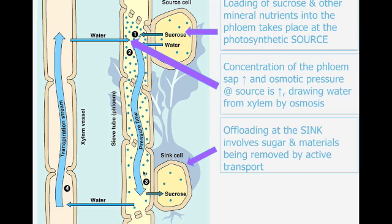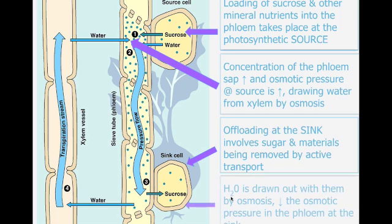Via diffusion, sugar molecules move from the area of high concentration at the source towards the sink where there is a low concentration of materials. Offloading happens at the sink, but we need to move substances from low concentration to high concentration, so active transport takes over — energy is required to move these substances from within the phloem into the sink cell. Water is drawn out with them by osmosis, then heads back into the xylem to keep the flow continuously going. The sucrose enters the sink cell, and sucrose plus oxygen produced via photosynthesis are used in respiration to provide the cells with energy to grow.